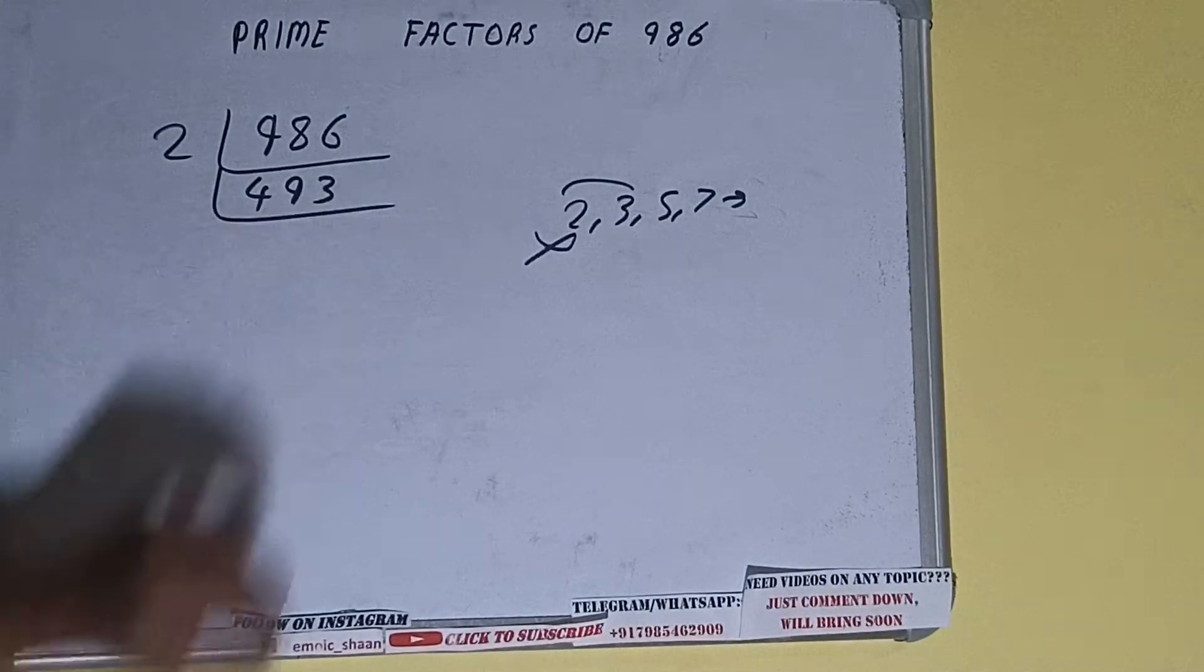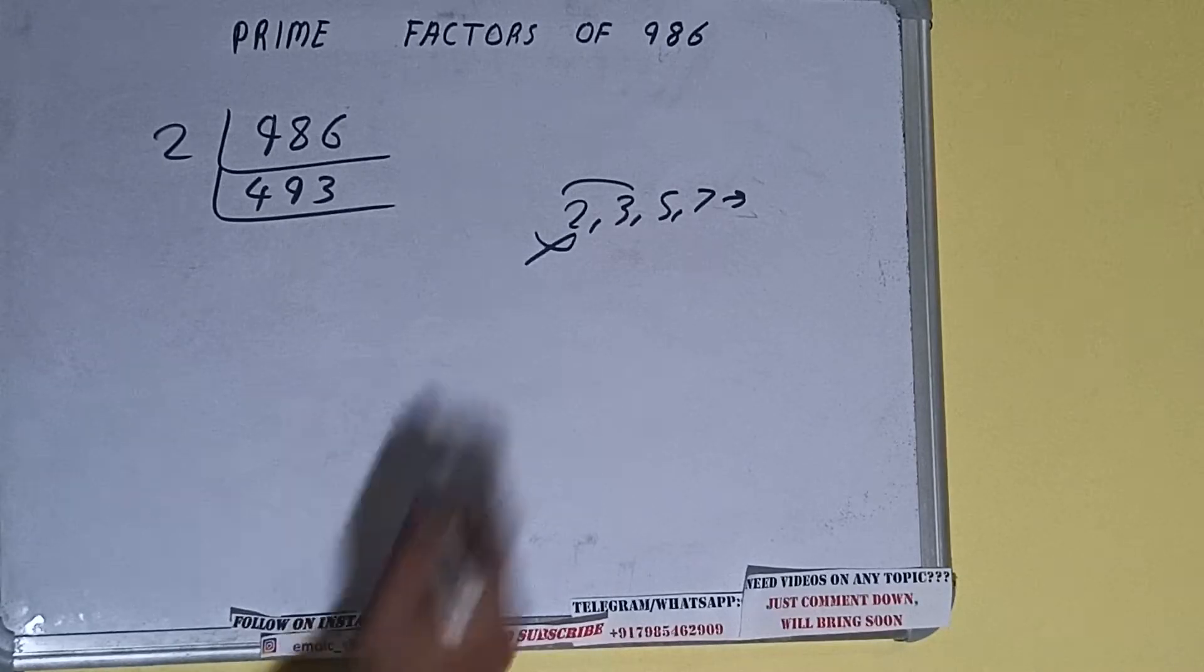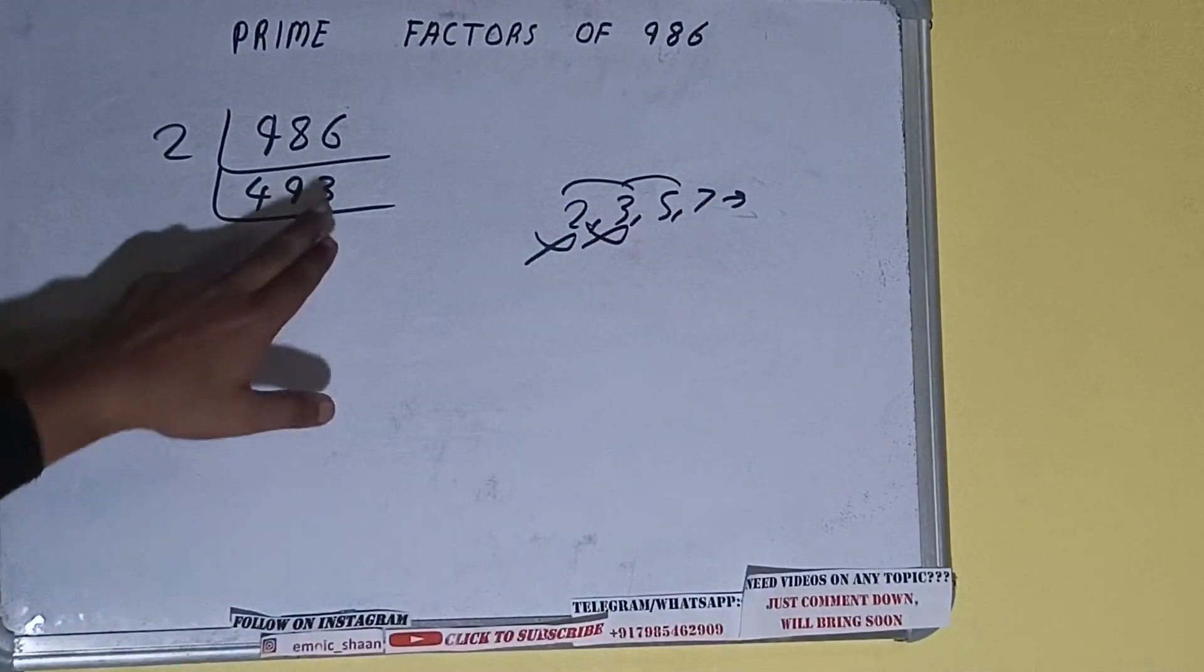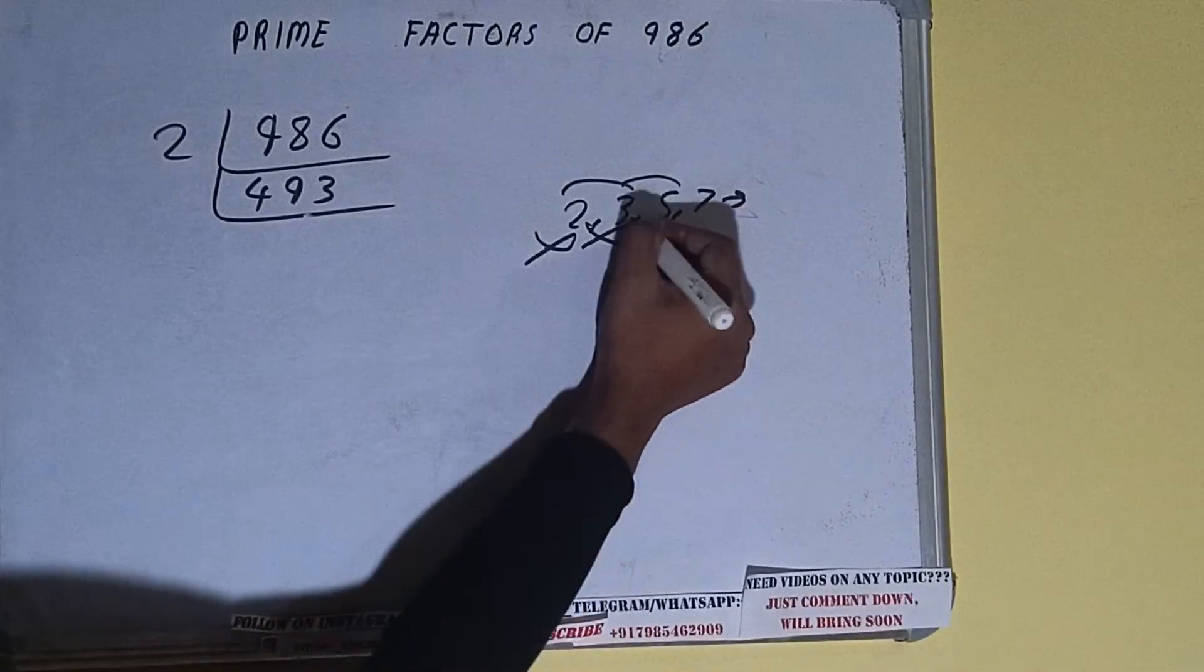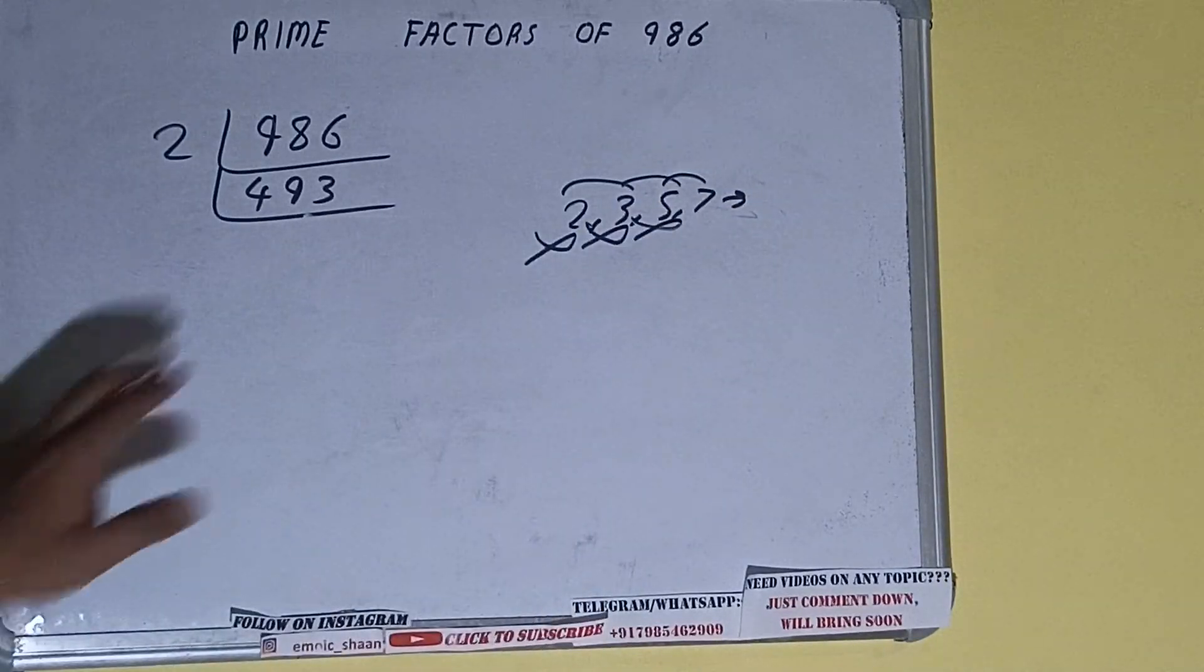Let's check with seven. Seven sevens are forty-nine, three... not divisible by seven also. Let's check with eleven. Eleven fours are forty-four, five three... not divisible by eleven also.